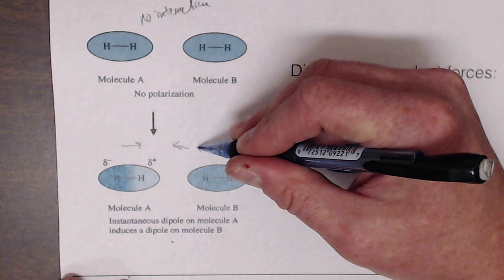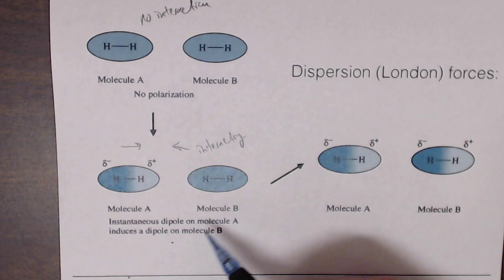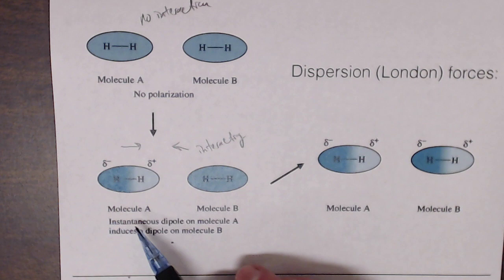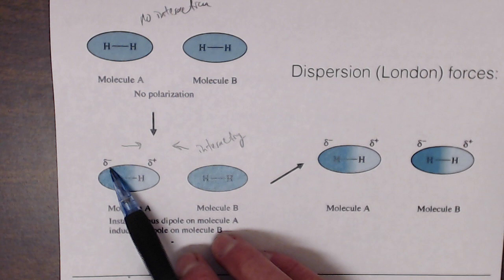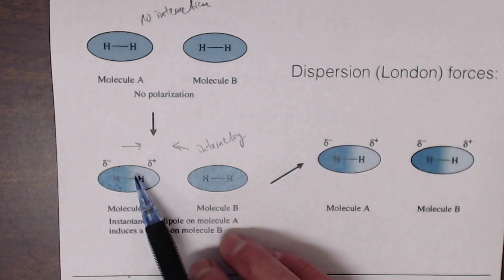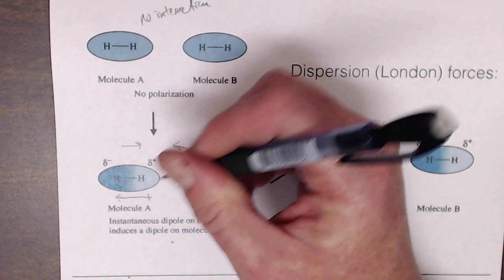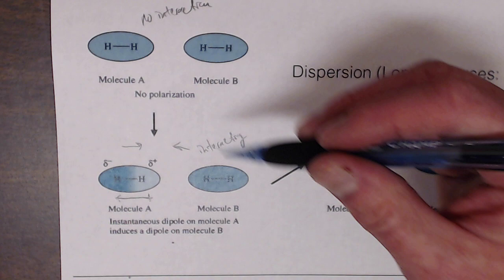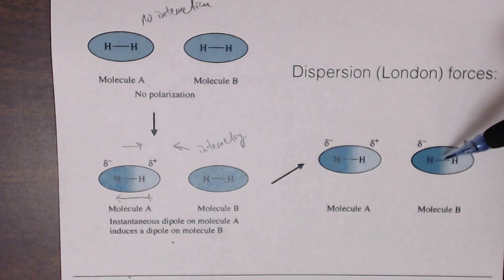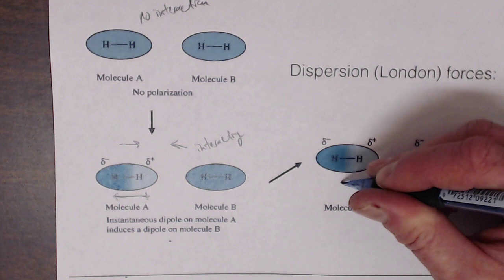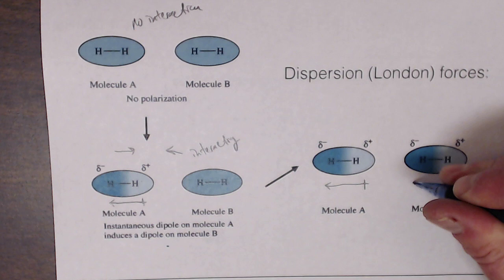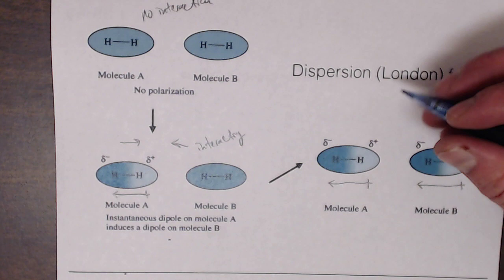As they interact, they can induce a temporary instantaneous dipole on molecule A, where all the electrons jump to one side, creating a partial negative charge on that side and partial positive on the other. If this molecule moves close enough to a neighboring molecule, it induces a dipole moment in that molecule too. Now we have two aligned temporary dipoles, allowing the molecules to stick together briefly — though this is a rather weak interaction.